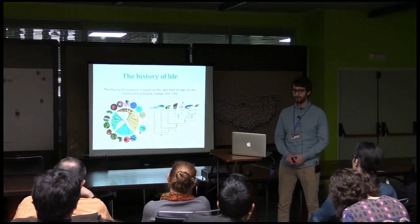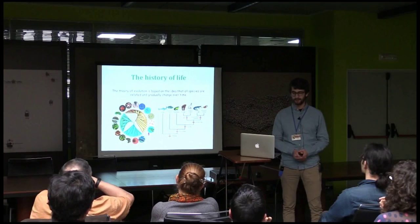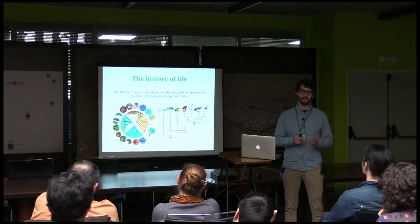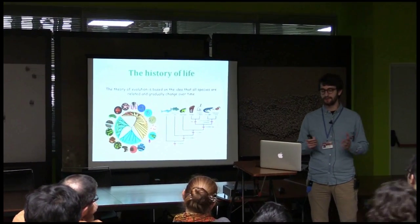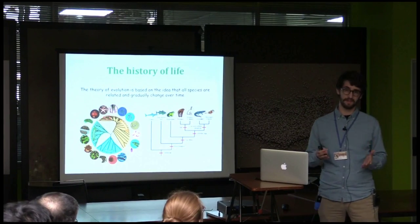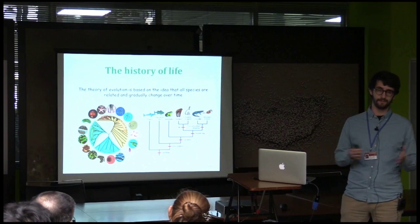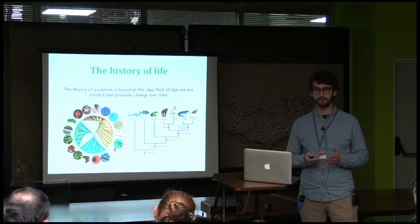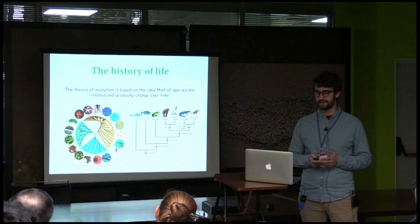As you all may know, the theory of evolution is based on the idea that all species are related and they gradually change over time, and the accumulation of small changes can produce that some populations of the same species get a differentiation so that they will not be able to reproduce with other populations of the species anymore. When this happens, we say that it's a speciation event.